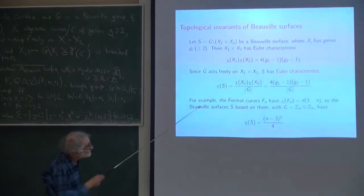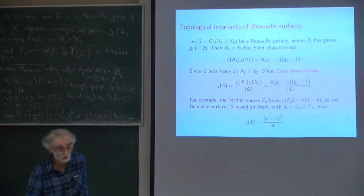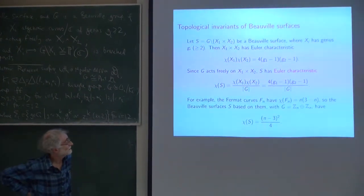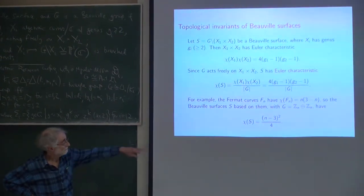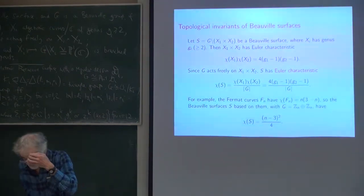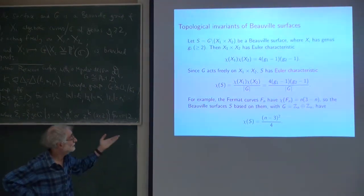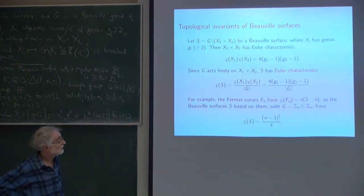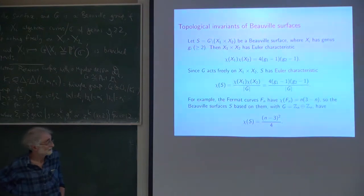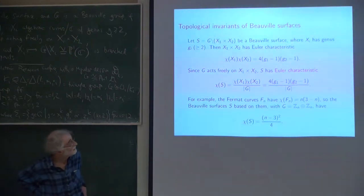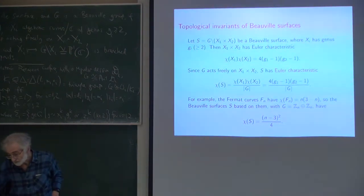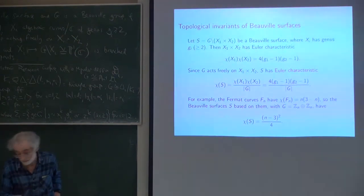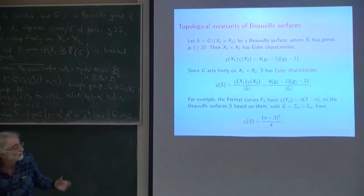In the case of the Fermat curves, one can easily work out their Euler characteristics. All of the examples I started with, those based on the Beauville surfaces, no matter which matrix A you take, they've all got the same Euler characteristic: (n−3)² over 2. So that's one obvious thing you might want to know about a Beauville surface if you want to recognize it.